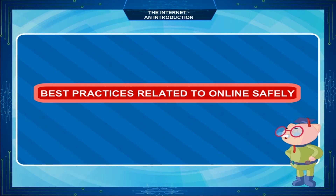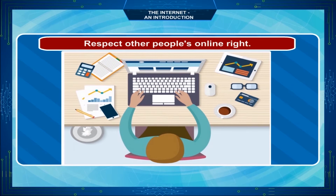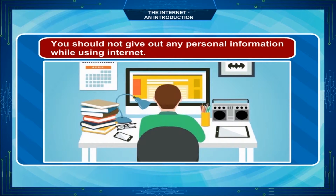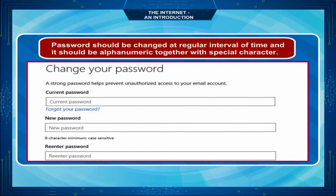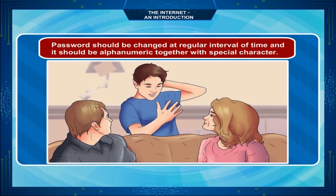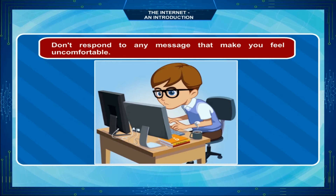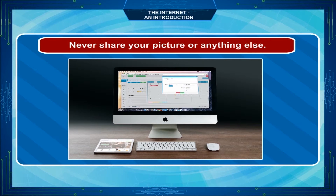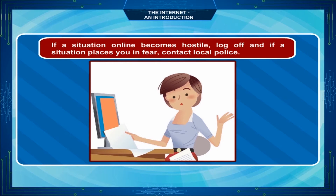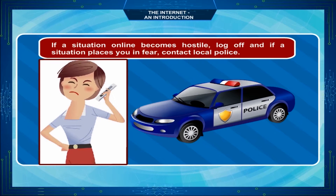Best Practices Related to Online Safety: Respect the privacy of other people and their online rights. You should not give out any personal information while using Internet. Passwords should be changed at regular intervals and should be alphanumeric together with special characters. Always talk to your parents so that together you can set up rules for going online. Don't respond to any message that makes you feel uncomfortable. Never share your picture or anything else. If a situation online becomes hostile, log off. And if a situation places you in fear, contact local police.